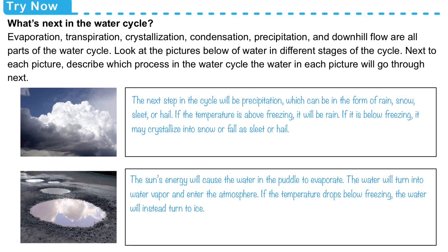From there it can really only go back down in the form of precipitation, which can be rain, snow, sleet, or hail. If the temperature is above freezing then it will fall down as rain. If the temperature is below freezing it can crystallize into snowflakes, or it can fall as sleet or hail.